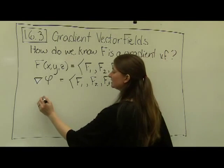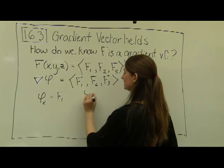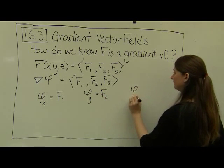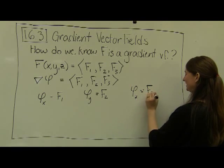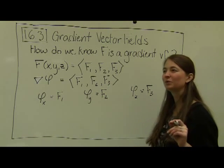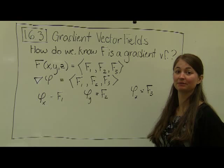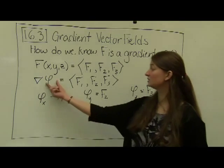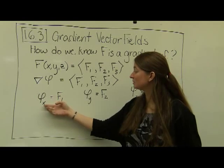That gives us that the partial derivative of phi with respect to x equals f1, the partial derivative of phi with respect to y equals f2, and the partial derivative of phi with respect to z equals f3. Now, recall Clairaut's theorem: our mixed partials always have to be equal to each other. Because phi is a continuous function, its mixed partials must be equal.